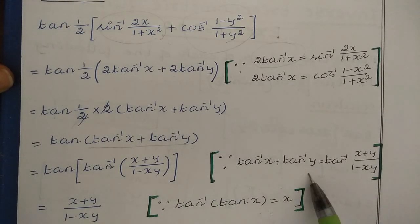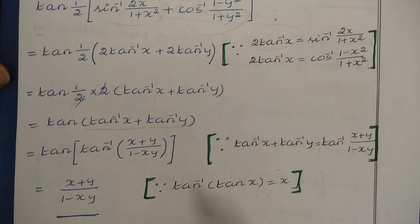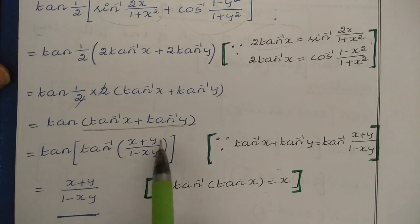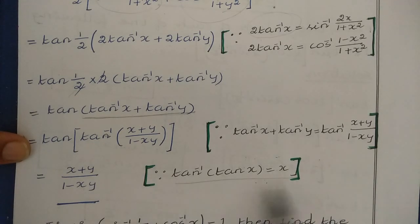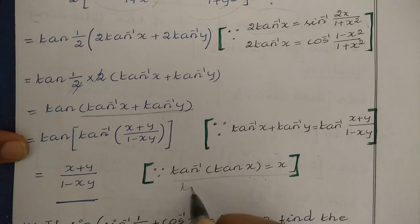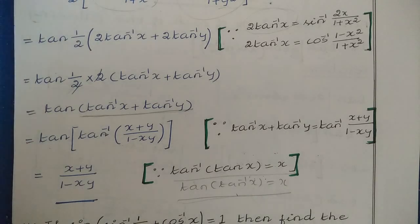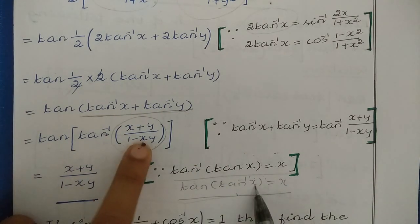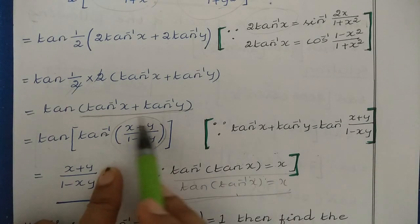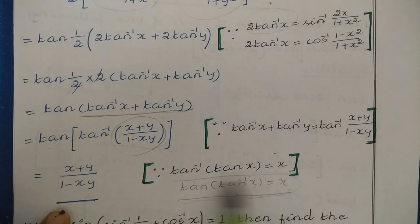Now apply the formula tan⁻¹x + tan⁻¹y = tan⁻¹((x+y)/(1−xy)). This gives tan(tan⁻¹((x+y)/(1−xy))). Using tan(tan⁻¹x) = x, the final answer is (x + y)/(1 − xy).